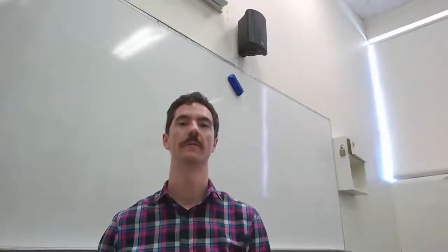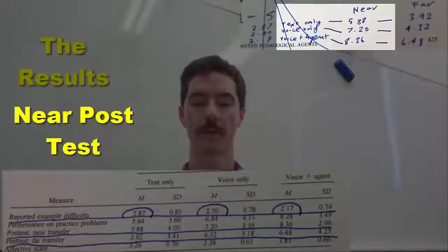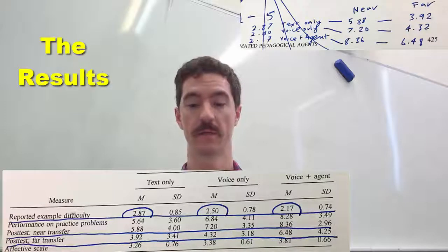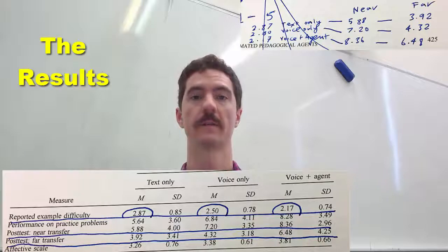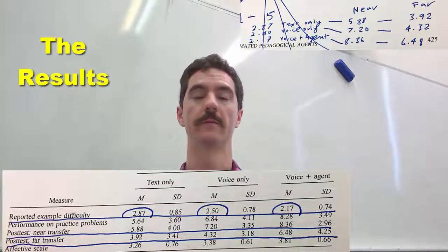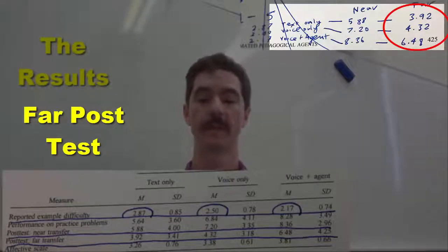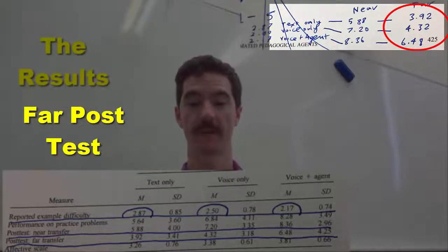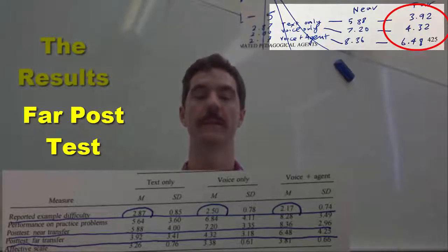You must take them with a grain of salt as they are very small scale, being only 50 participants. So for the near post test: text only was 5.88, voice only 7.20, and voice plus agent 8.36. You can see quite a significant change of two points between text only and voice only, and then a full point higher for voice plus agent.